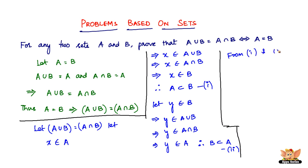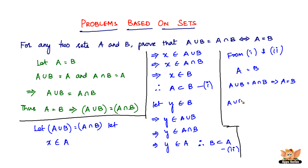From these two equations — A is a subset of B, and B is a subset of A — we can say that A equals B, because both of them are subsets of each other. Thus, A union B equals A intersection B implies A equals B. So combining both directions, we can write that A union B equals A intersection B if and only if A equals B. Both sides imply each other.